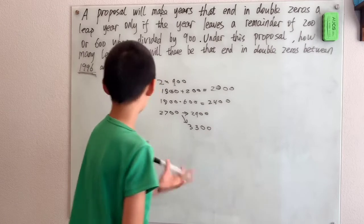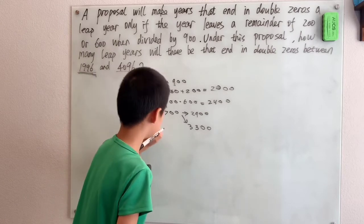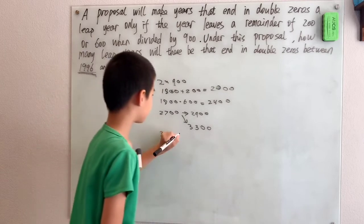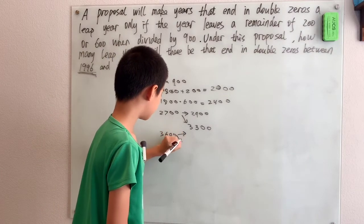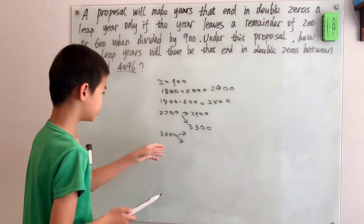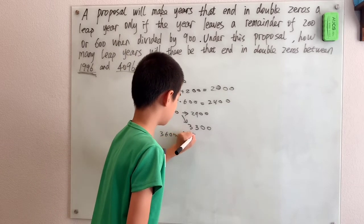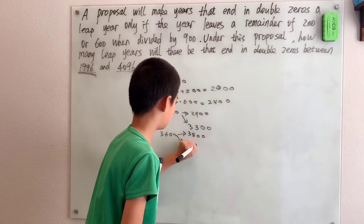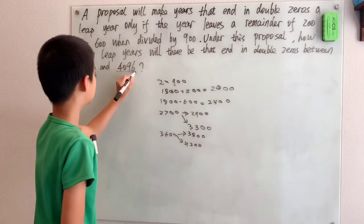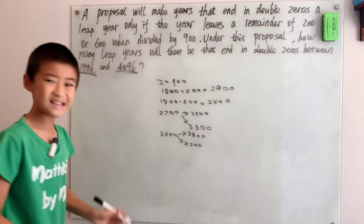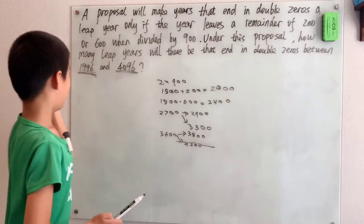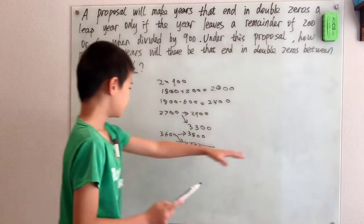The next multiple of 900 is 3600, and that will give us two answers: 3800, which is 3600 plus 200, and 4200. We can see that 4096 is the limit, so 4200 is over the limit, so we can get rid of that.